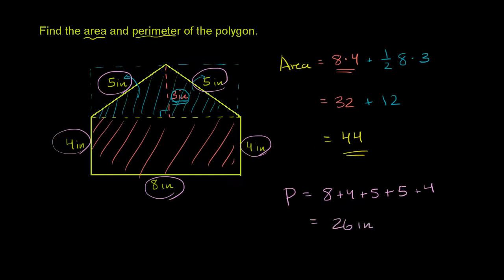And let me get the units right, too. Because over here, I'm multiplying 8 inches by 4 inches. So you get square inches. 8 inches by 3 inches. So you get square inches again. So this is going to be square, square inches. So area is 44 square inches. Perimeter is 26 inches.